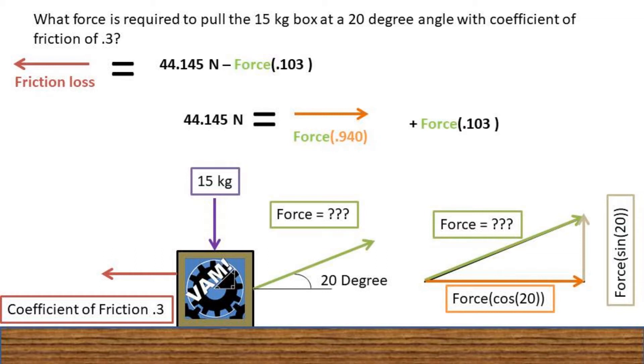The next step is to get the unknown force, which is the pull on the rope, to one side of the equation. We can do this by adding force times 0.103 to each side of the equation.